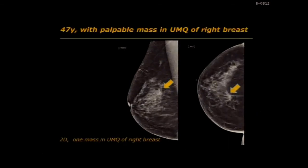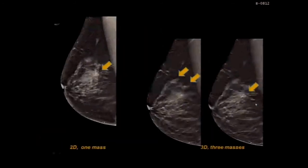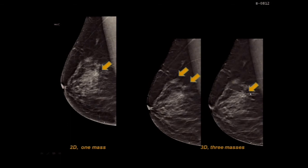Another case is a 47-year-old patient with a palpable mass in the upper medial quadrant of the right breast. On 2D mammography, we can clearly see that stellate lesion, that mass. But when we performed 3D mammography, we noticed two additional small stellate lesions, which were in the outer upper quadrant, and the bigger one is in the medial part of the right breast.